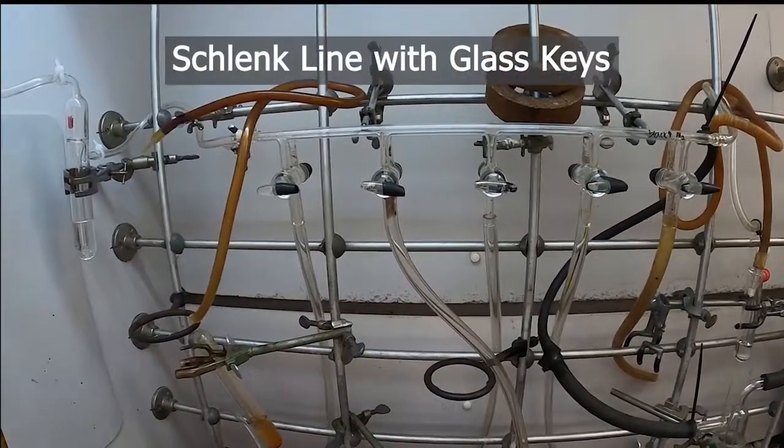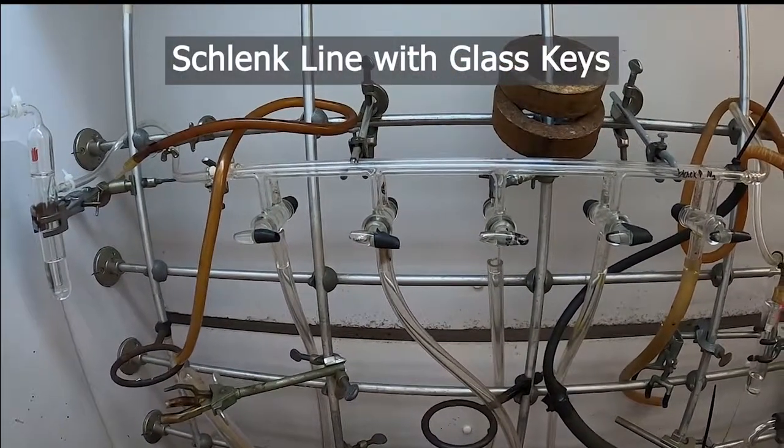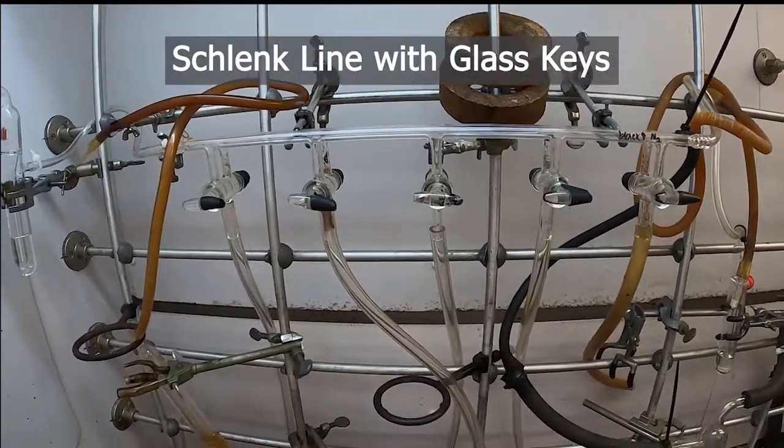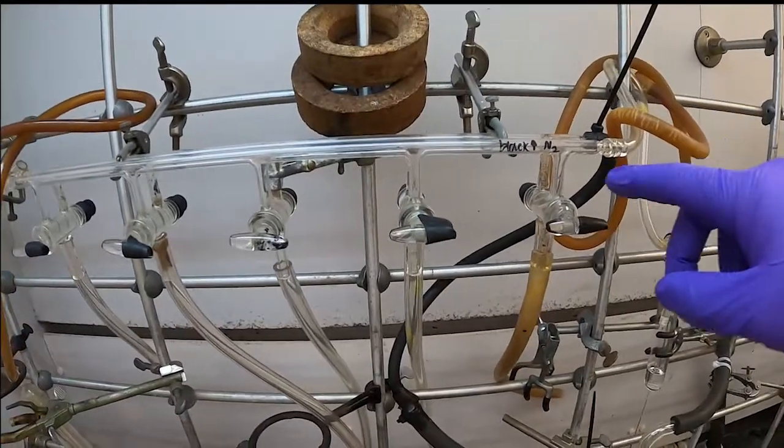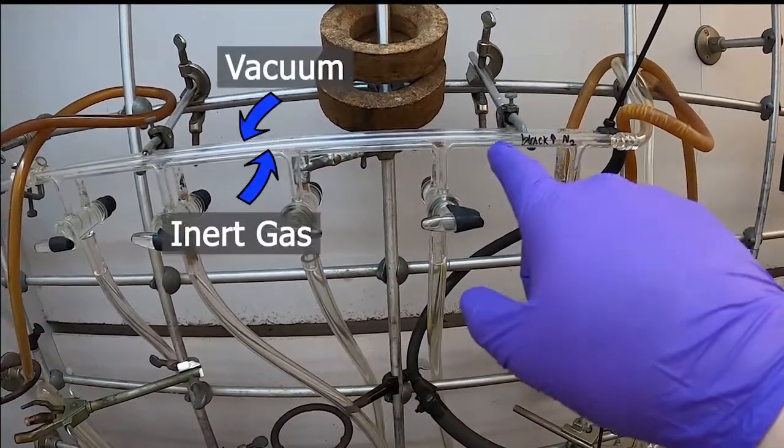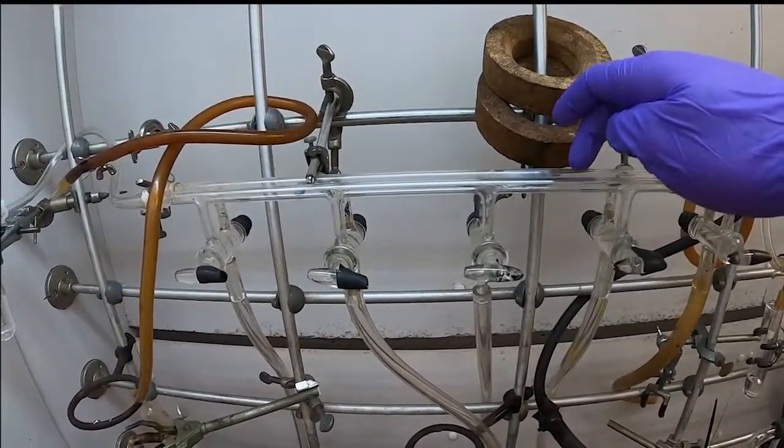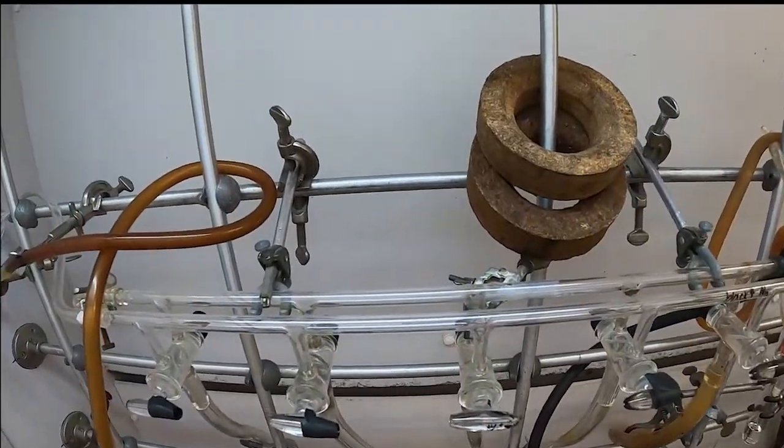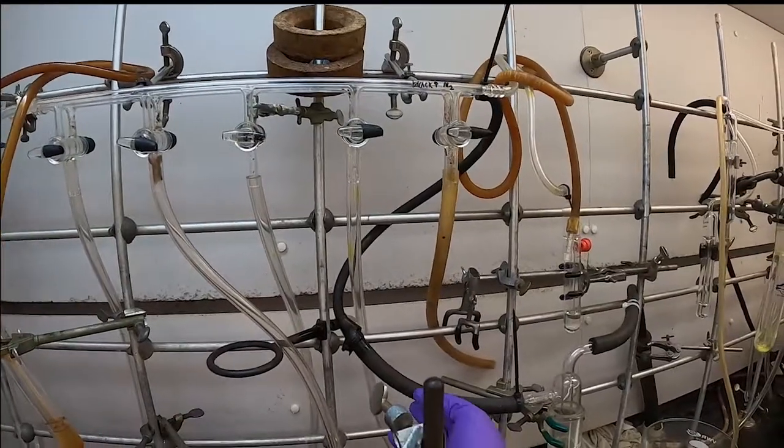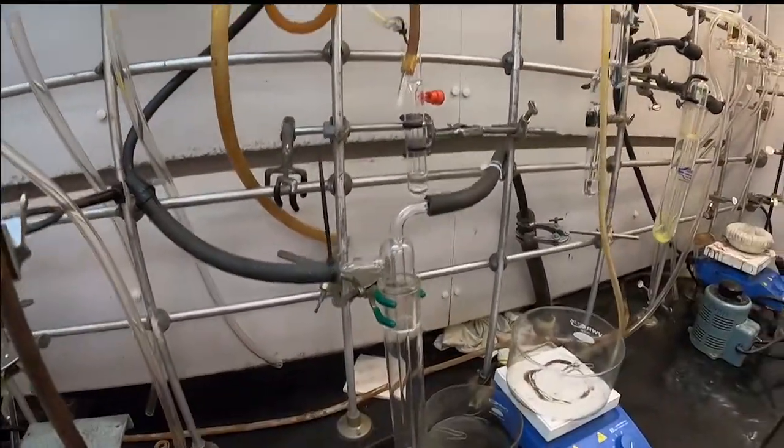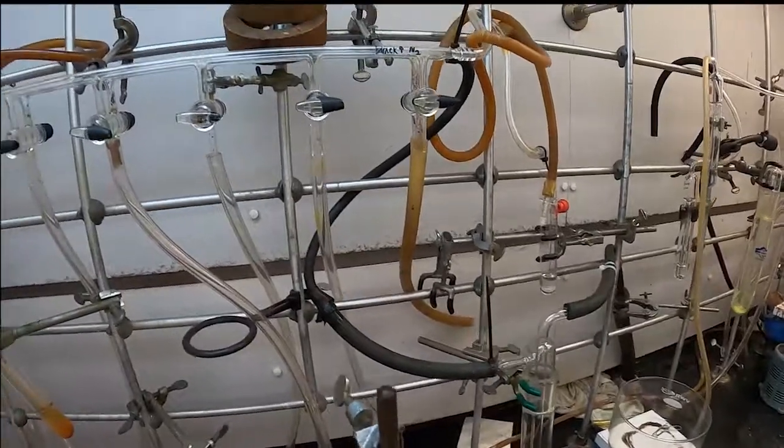So the other common style of Schlenk apparatus is this kind with the glass stopcocks. So you can see here, this front line, it's been conveniently labeled as the nitrogen, and the one behind is for vacuum. You can see it connected here to the trap and the vacuum connection over there.